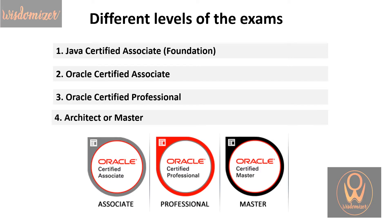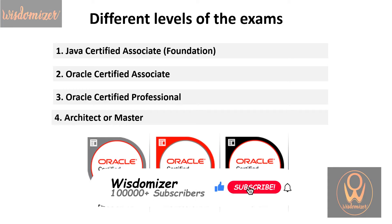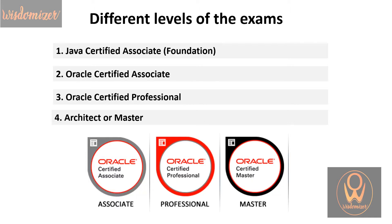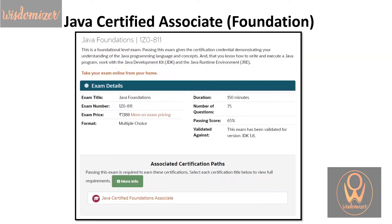There are four levels of certifications in Java. The first one is Java Certified Associate and Foundation — the most basic and foundation level where you will be asked basic questions. The second one is Oracle Certified Associate, one step above the foundation level with more typical questions. The third one is Oracle Certified Professional. And the fourth one is Architect or Master level. I will be giving you in-depth knowledge of all certification levels, including some mandatory conditions and twists and turns to qualify or appear for the exams, so please watch this complete video.